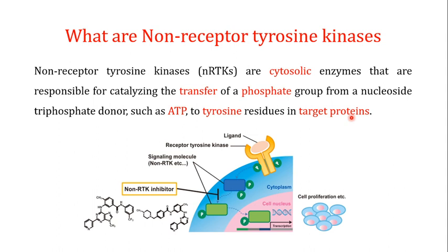In humans, tyrosine kinases are broadly divided into two types: receptor tyrosine kinases and non-receptor tyrosine kinases. Both classes share the same fundamental capability — they attach a phosphate group at the tyrosine amino acid of a target protein. The key distinction lies in where they are located within the cell.